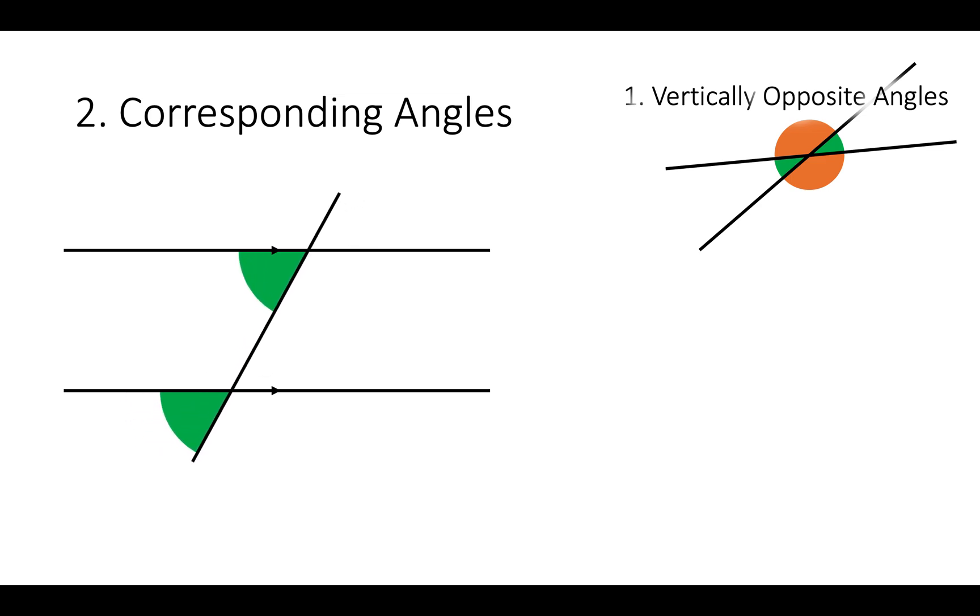They can also look like this, or like this, or like this. And because of this, we get an F shape. And so lots of people remember this as F angles. Now, the orange angles are the same as well for the exact same reason. And that's called corresponding angles.